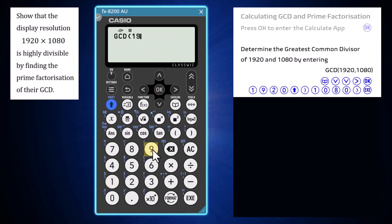Now enter the two integers separated by a comma, which can be entered by pressing SHIFT and the right bracket key. By closing the brackets and pressing EXECUTE or OK, we can see that the GCD of these two integers is 120.